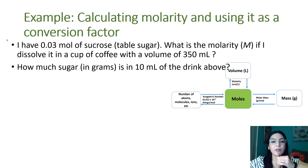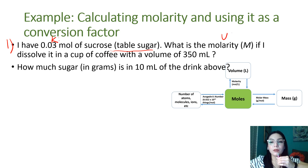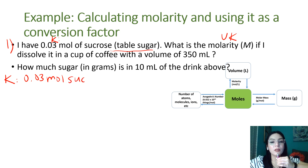The first example: we have 0.03 moles of sucrose (table sugar). What is the molarity if it's dissolved in a cup of coffee with a volume of 350 mL? Our knowns are 0.03 mol sucrose and a volume of 350 mL solution. Our unknown is molarity — moles of solute per liter of solution.